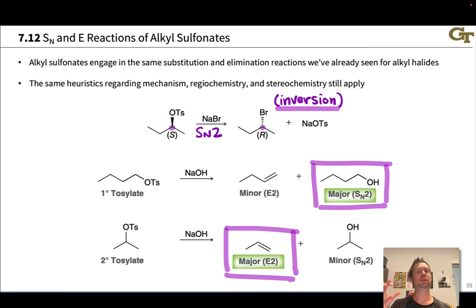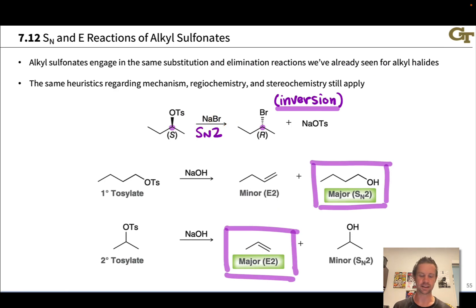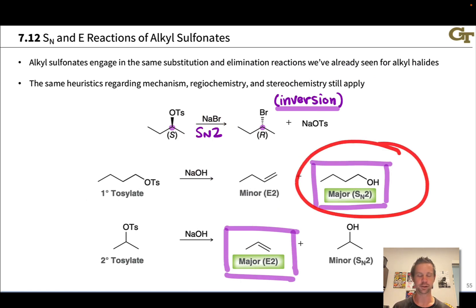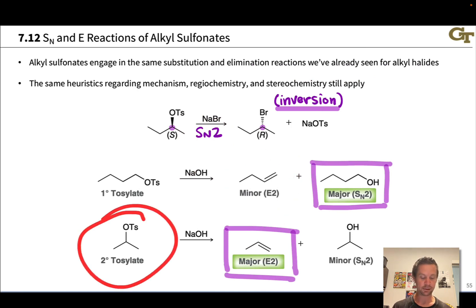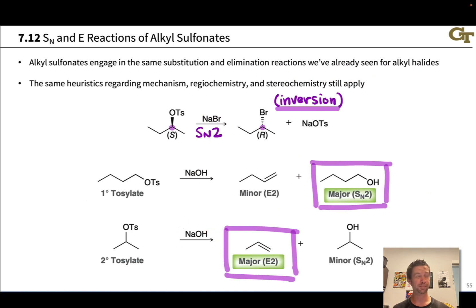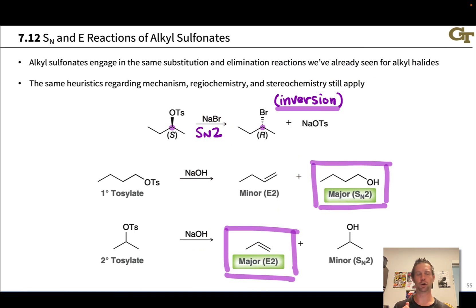The ideas we've developed about alkyl halides — how they react with nucleophiles and bases to do substitution and elimination — apply just as well to alkyl tosylates. For example, a secondary tosylate reacting with bromide (a good nucleophile, negligibly weak base) gives SN2 with inversion. A primary tosylate with hydroxide (good nucleophile and base) gives major SN2 with minor elimination. A secondary tosylate with NaOH gives elimination as the major product with minor SN2. For sulfonates the exact same heuristics apply.